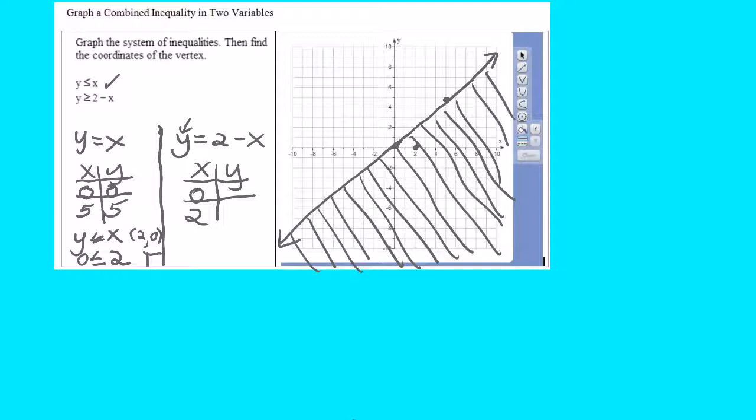Suppose I let x equal 0. Suppose I let x equal 2. If x is 0, then y is going to be 2 minus 0, which is 2. And if x is 2, then y is going to be 2 minus 2, which is 0. Okay. I'm going to graph those two points, 0, 2, and 2, 0, and I will graph the line.